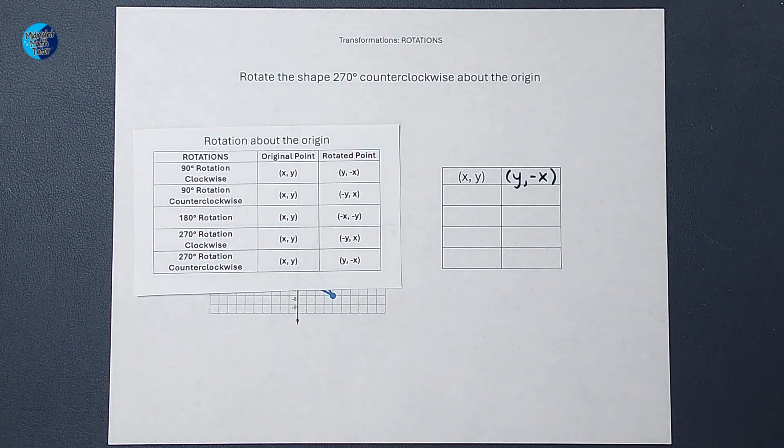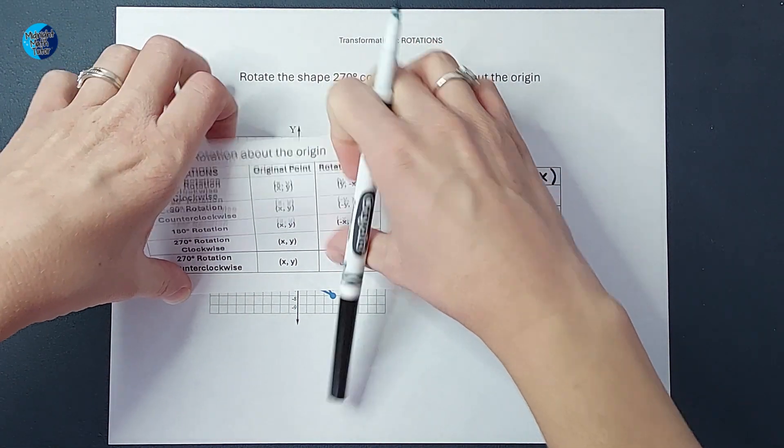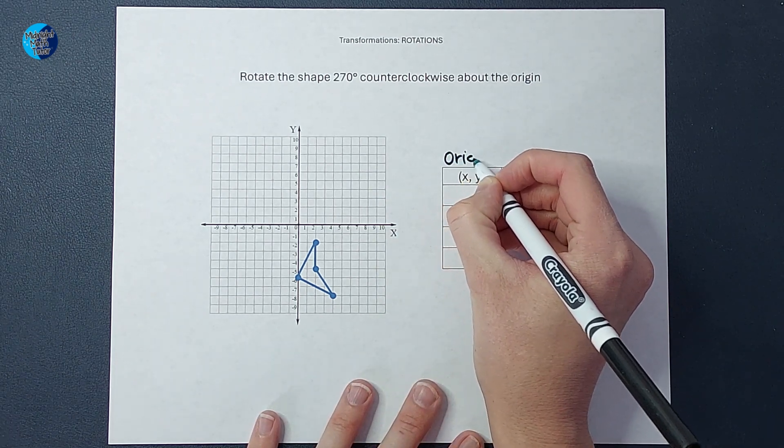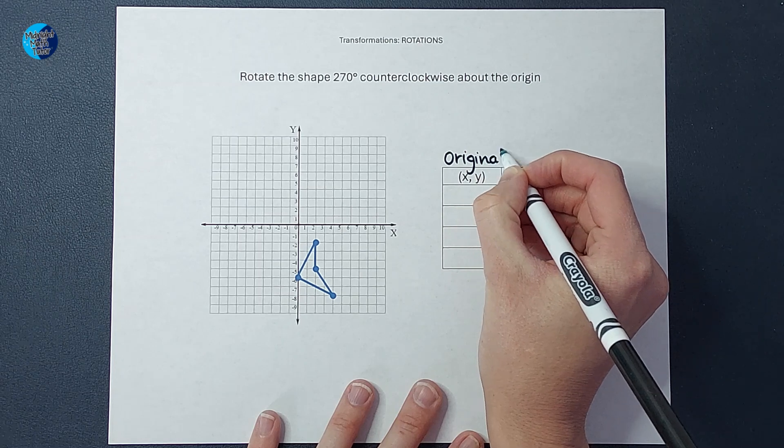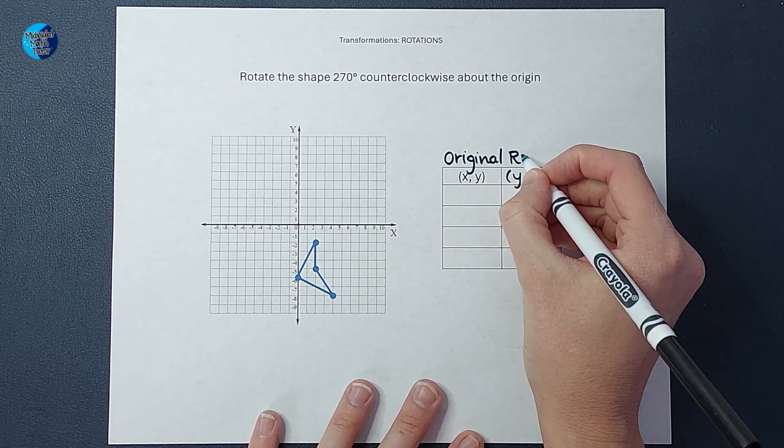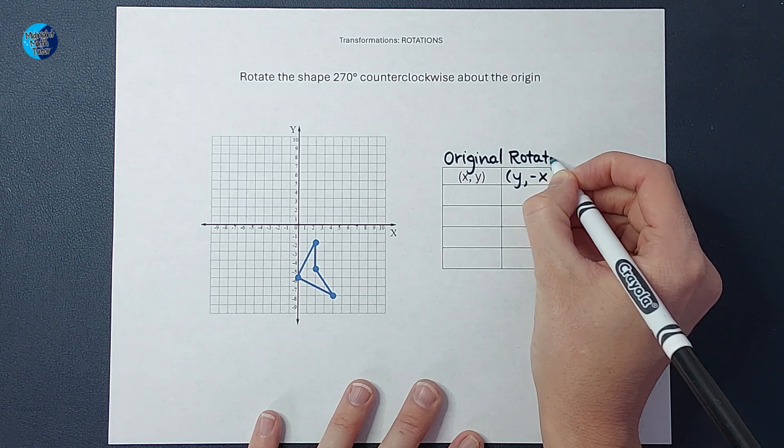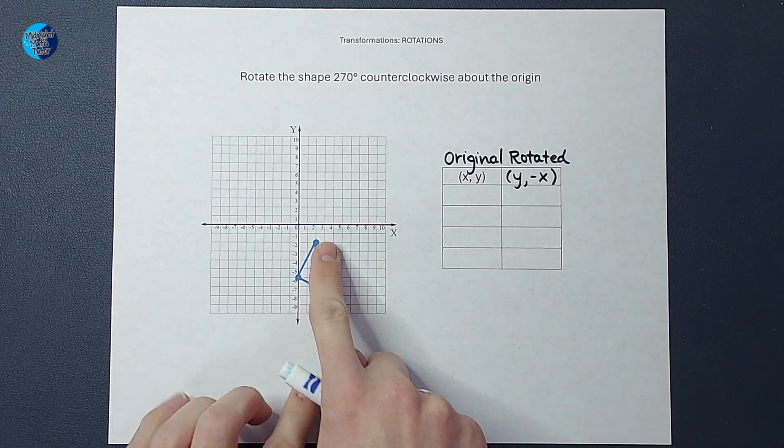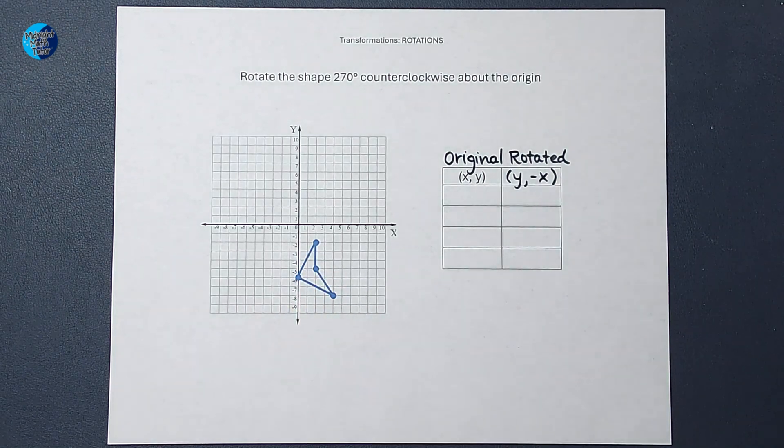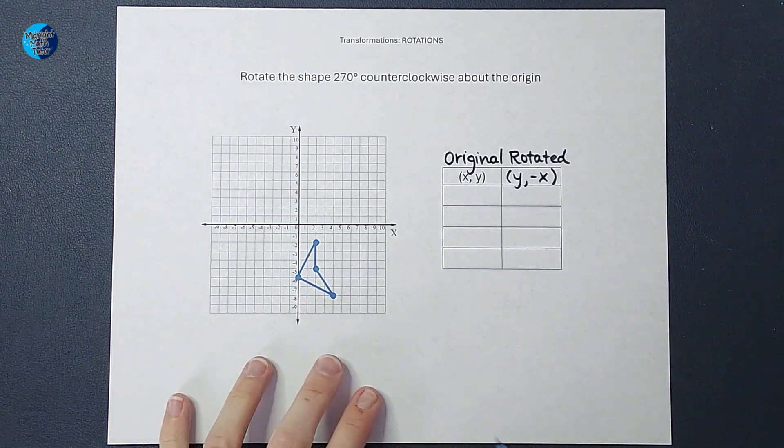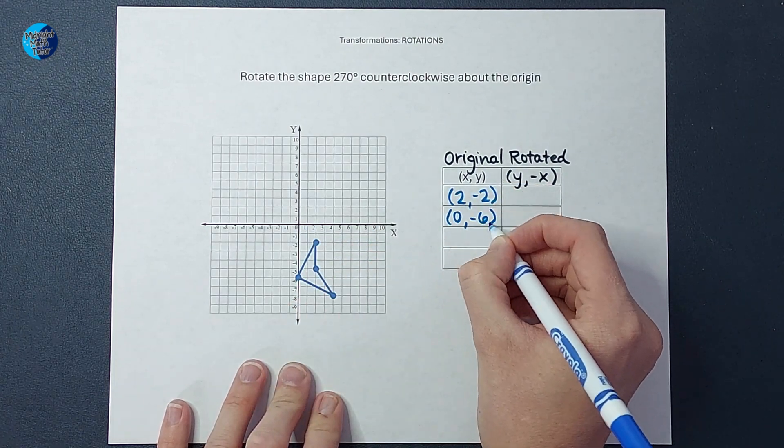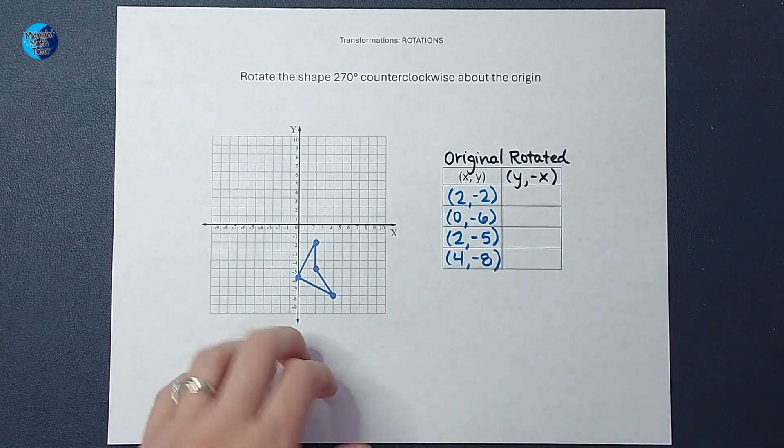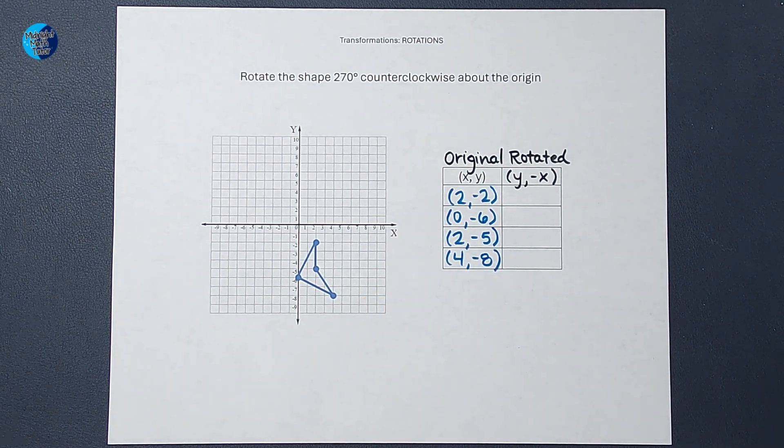So I'm putting that as a reminder for myself there. So (x, y) will be my original shape, the points on there. And then (y, negative x) is going to be the points for the rotated shape. The first thing I'm going to do is figure out all of these points what their ordered pair is. Okay, there are each of those points.